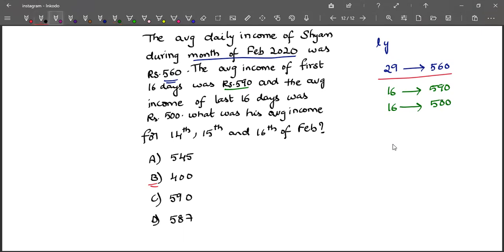See, the overall average is for 29 days, and here we are having 16 and 16, 32 observations, which means 3 observations are getting repeated. What are those? Those are 14, 15, and 16.